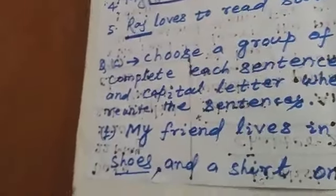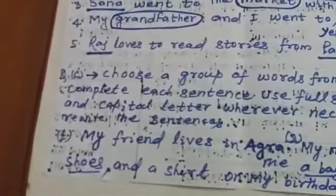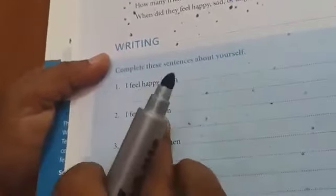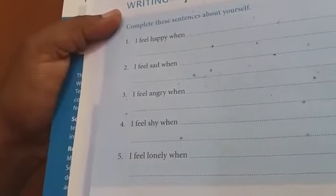The next question says: 'Complete these sentences about yourself.' For example: 'I feel happy when...', 'I feel sad when...', 'I feel angry when...', 'I feel lonely when...' Students need to complete these sentences based on their own feelings. This is where I will end this lecture.